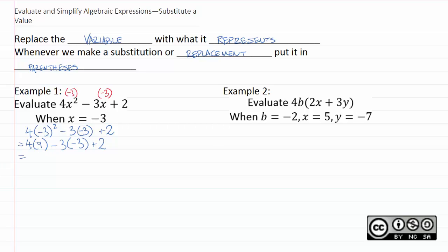From there, we have two multiplication steps, and so we'll just execute both. Four times nine is thirty-six. Negative three times negative three is positive nine, plus two, which is simply forty-seven. This works the exact same way, even if you have multiple variables.